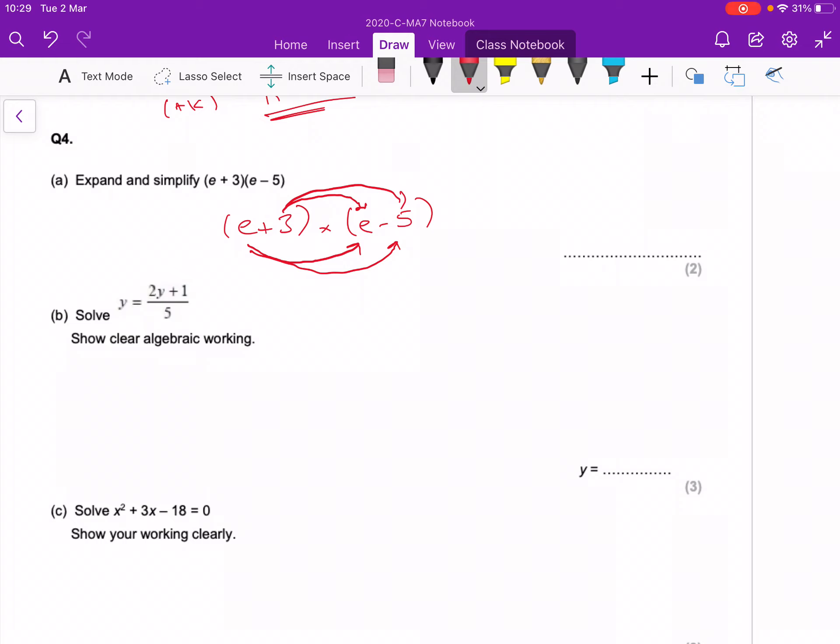Firstly, e times e is e squared. E times minus five is minus five e. Now we go to the three: three times by e is plus three e, and three times by minus five is minus fifteen. The two e's in the middle can be simplified, so the final answer is e squared minus two e minus fifteen.